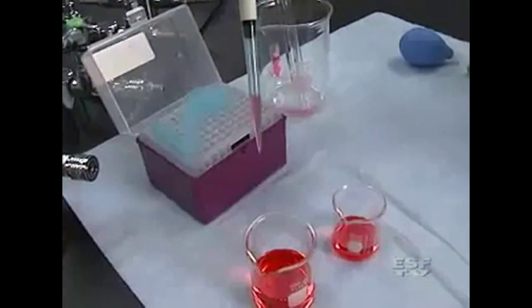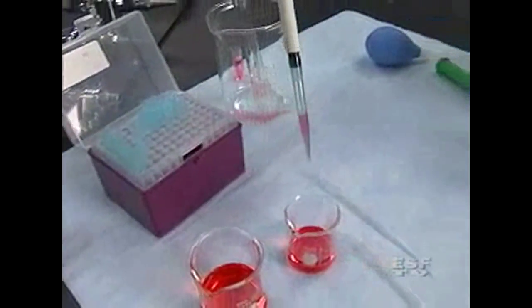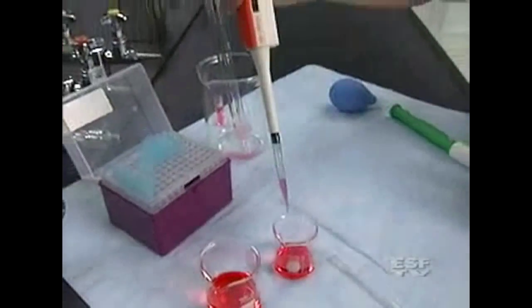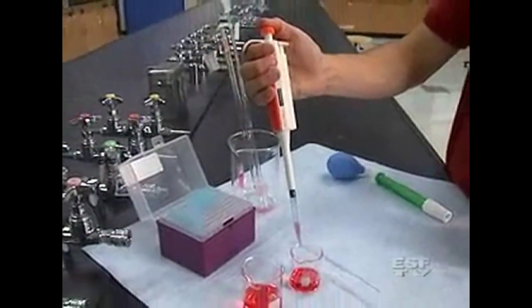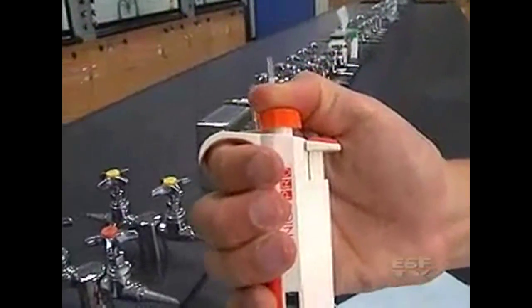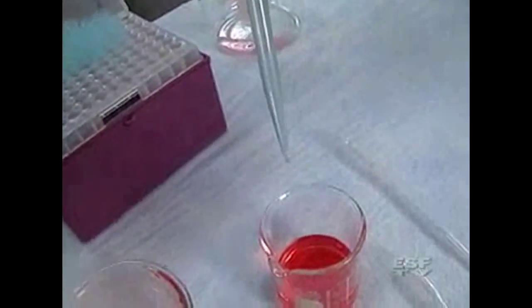And now you can move this over to the beaker that you want to transfer to and I'm going to push back down on that plunger and as I push down slowly it begins to withdraw and sometimes you'll notice that at the end of the tip there's a small little droplet as we have here.